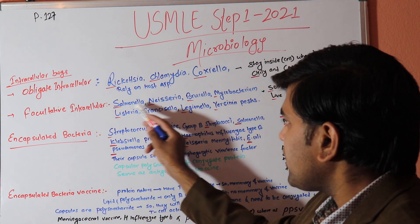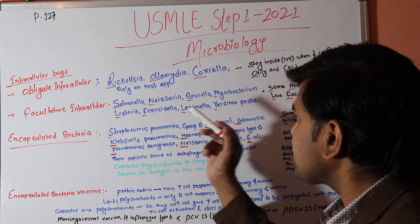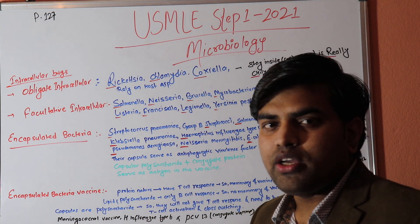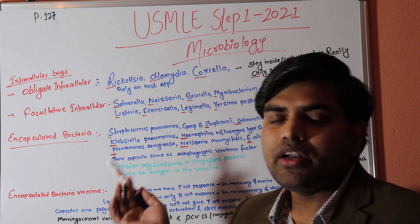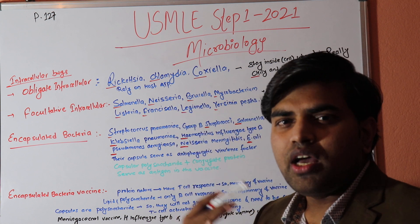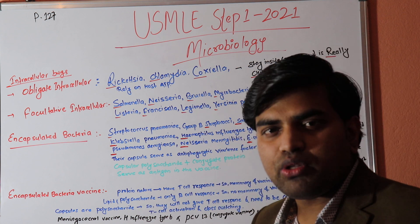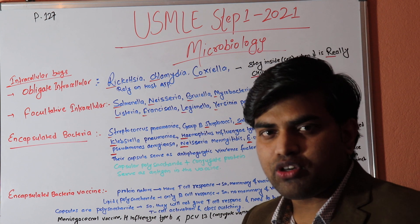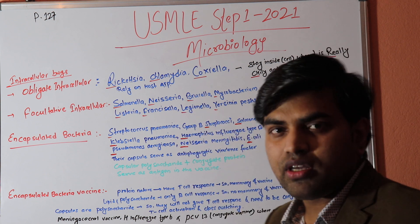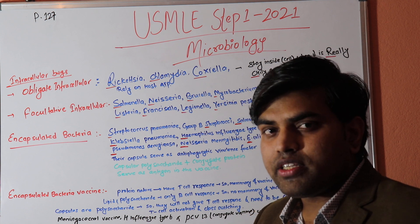The facultative intracellular organisms are: Salmonella, Neisseria, Brucella, Mycobacterium tuberculosis, Listeria, Francisella, Legionella, and Yersinia pestis. These are all of major medical importance. Salmonella causes typhoid, which is endemic in Southeast Asia and Africa. Neisseria causes meningitis. Brucella causes brucellosis. TB is found worldwide. Listeria causes meningitis in immunocompromised patients. Francisella and Legionella cause pneumonia. Yersinia pestis causes plague.